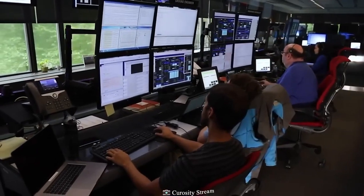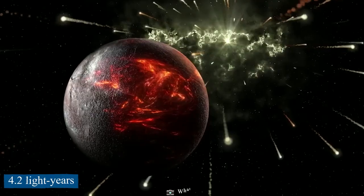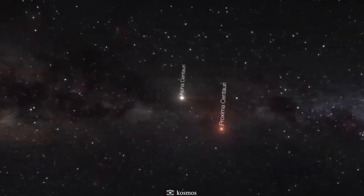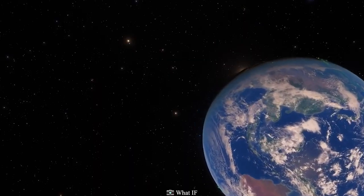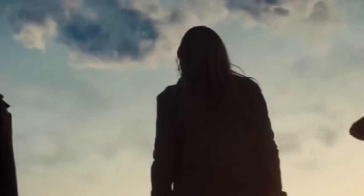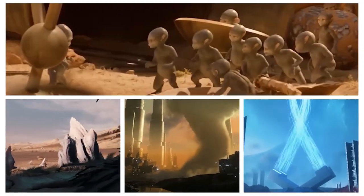Scientists are scouring the exoplanet Proxima b, located just 4.2 light-years away from Earth, with the help of the extremely powerful James Webb Space Telescope, in search of artificial light that could indicate the presence of life. These glimmers of light may prove to be the conclusive proof that intelligent life from beyond our solar system exists.